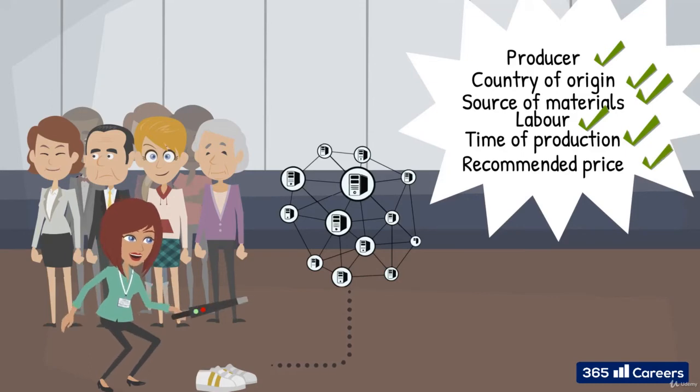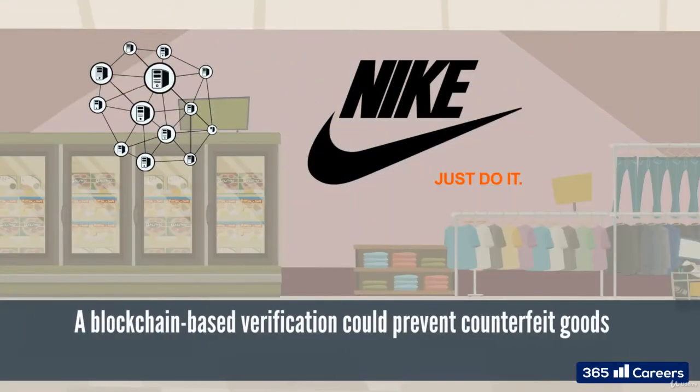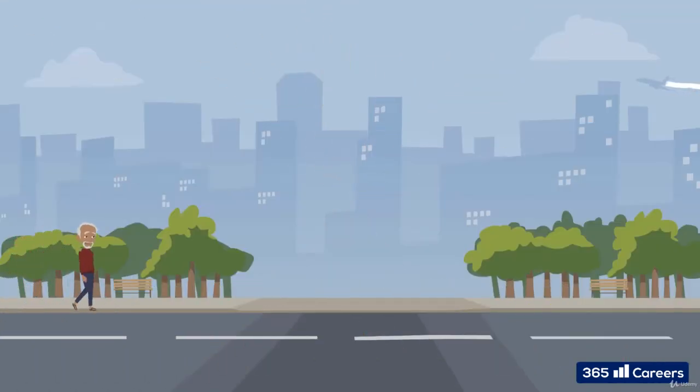This could help remedy unethical practices like sweatshops and child labor in some developing countries. Moreover, famous brands like Nike suffer from a lot of counterfeit products. And the problem is that customers are not always able to distinguish Nike's original products from imitations. A blockchain-based verification process could help this issue.